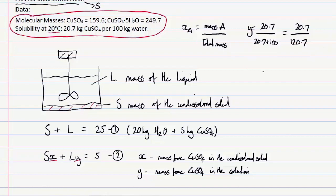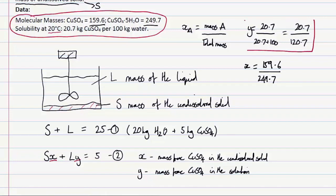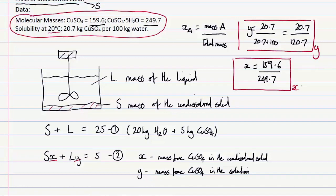Similarly, for finding X: given the data on molecular masses, we know that the fraction of copper sulfate in copper sulfate 5-hydrate must be the ratio of the two molecular masses. This tells us that our mass fraction X = 159.6 / 249.7. So now we've defined Y, the mass fraction of copper sulfate in solution, and X, the mass fraction of copper sulfate in copper sulfate 5-hydrate.